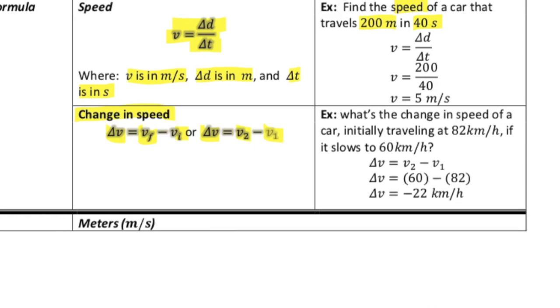So what is the change in speed of a car that is initially traveling at 82 kilometers per hour and slows to 60 kilometers per hour? Okay, so as you can see in this question, we're using the non-standard unit.